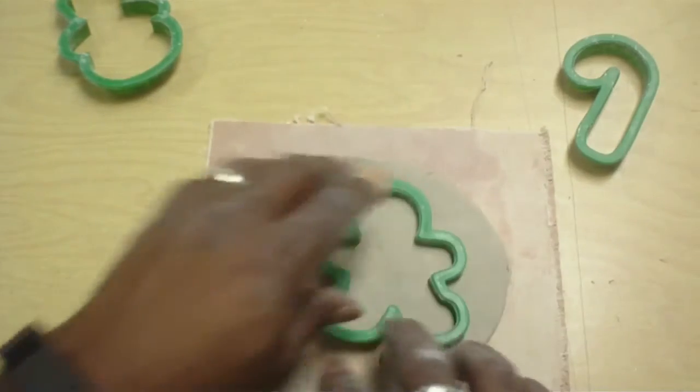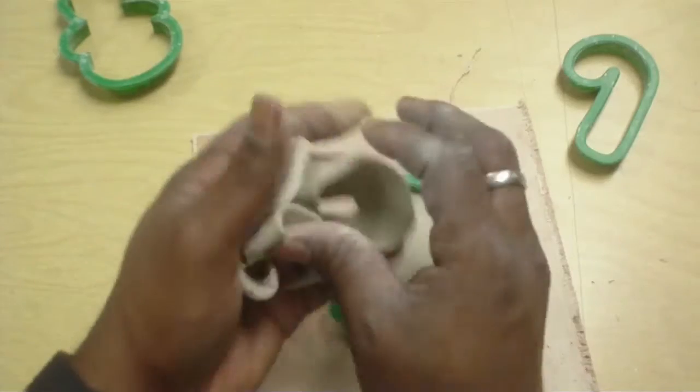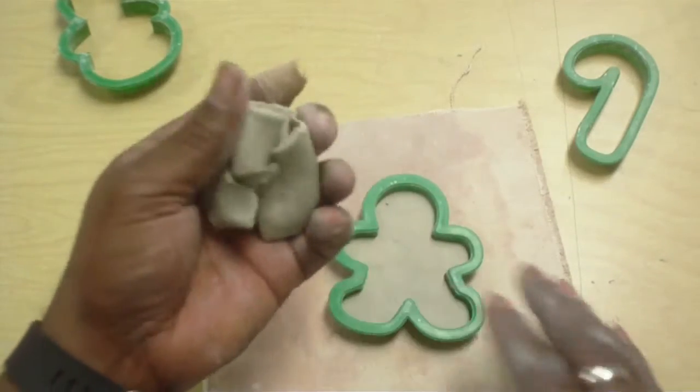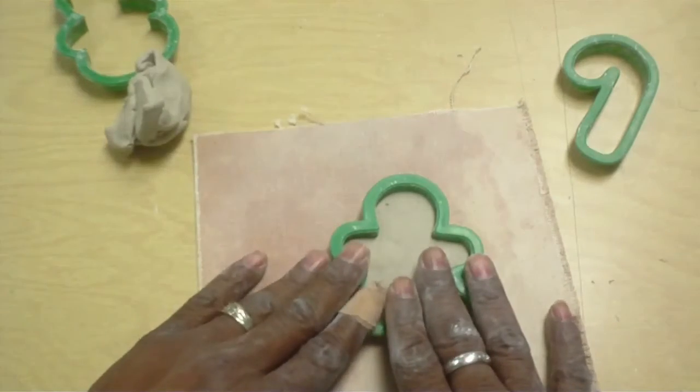Peel the edges off. Peel the edges off like so. This is extra clay. You can play with this if you want while I come by and pick these up when you finish. But this is the extra, this is your ornament.